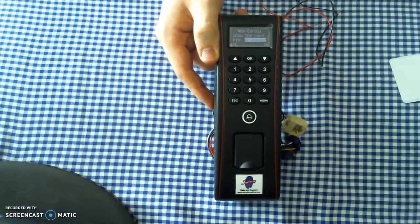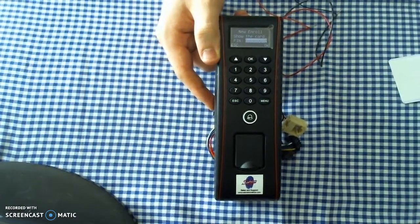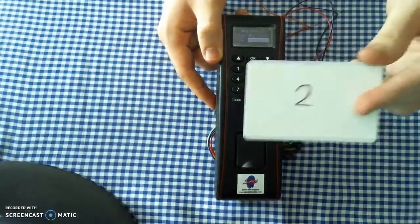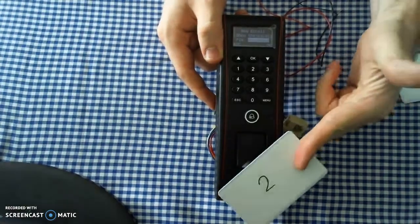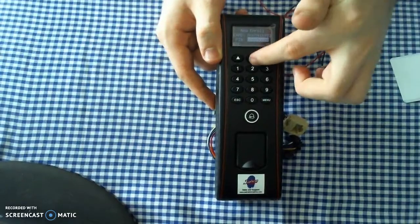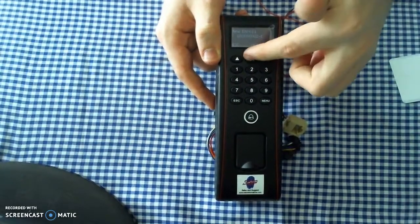It will ask for us to show their card, not the Admin card, but the card for that specific user, which is number 2. That is enrolled. We'll say OK, and we'll save.